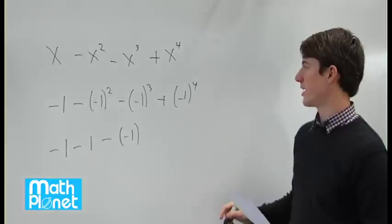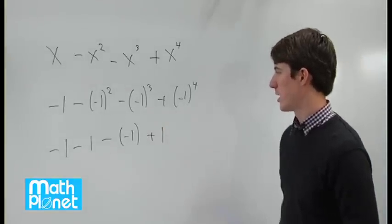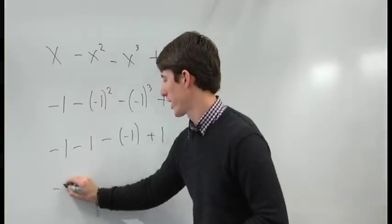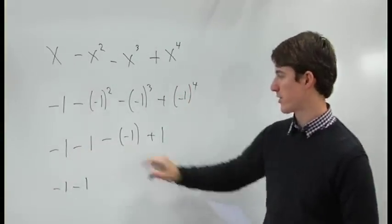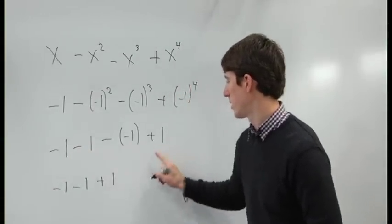Negative one to an even power is even, so we get plus one. So then we have negative one minus one, minus a negative is positive, plus one.